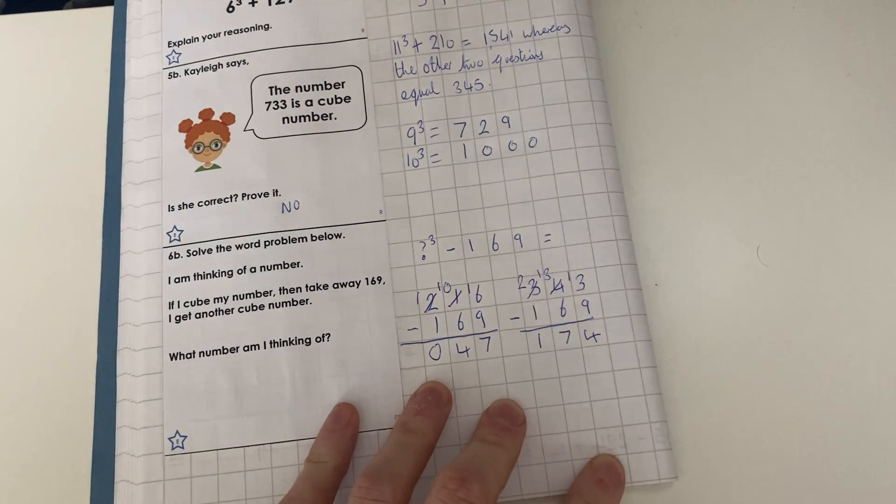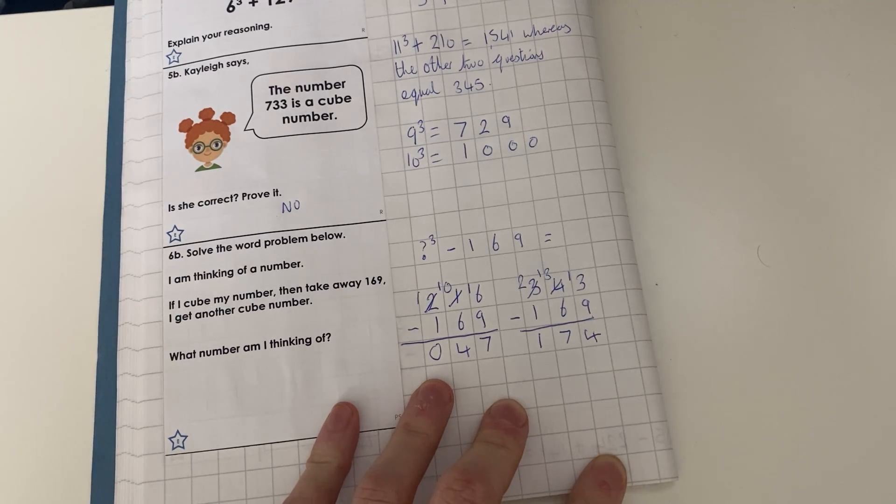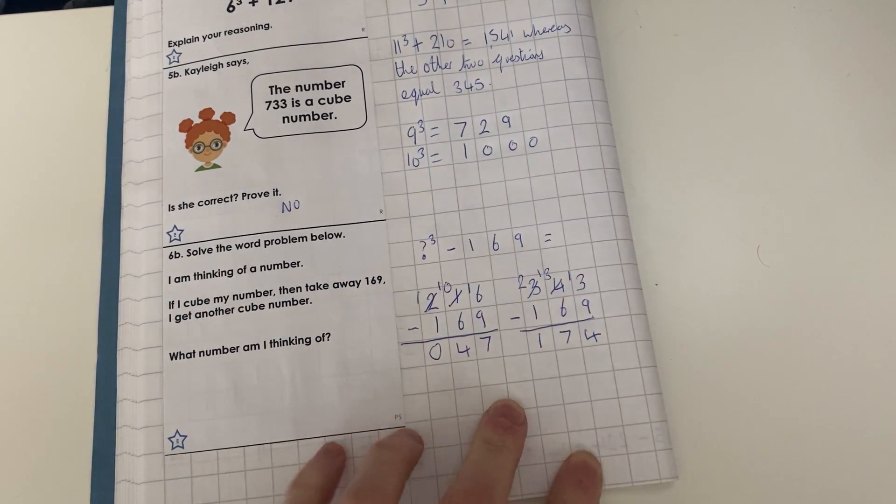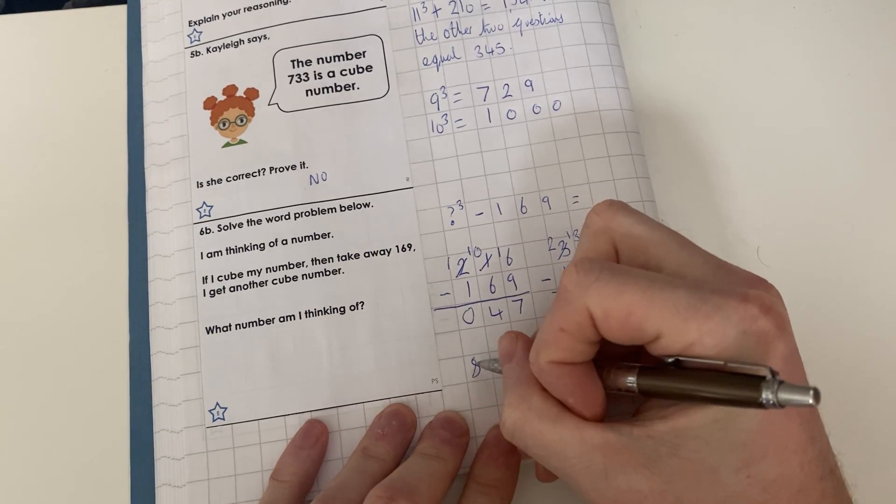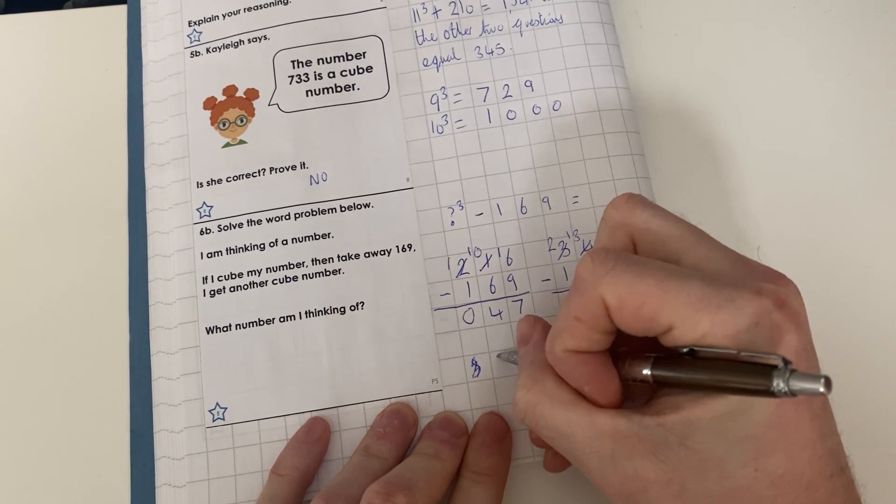Let's try 8³ now. As you can see, children, 8³ is 512. What I've done—for the first two calculations, they're both incorrect. Doesn't mean I've got the wrong answer yet.